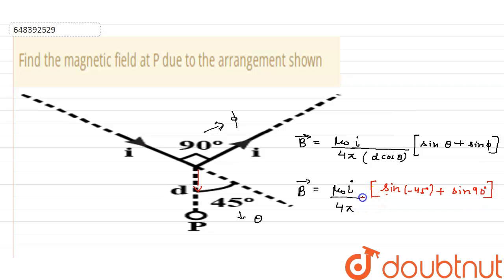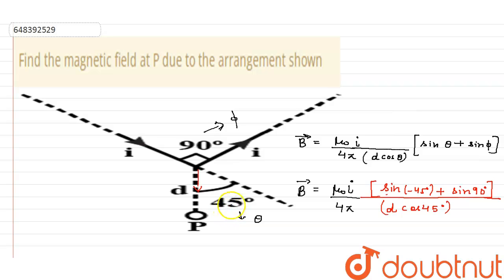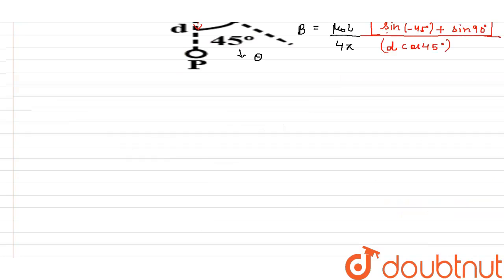This entire expression is divided by d·cosθ, which is d·cos(45°), because the cos component is along the anti-clockwise direction — aligned with the axis — and does not violate the Cartesian plane setup.